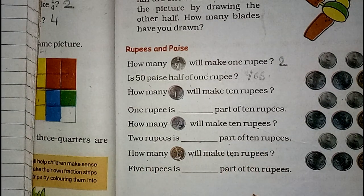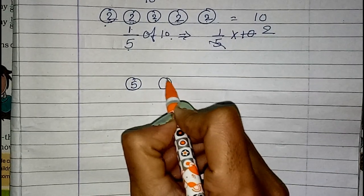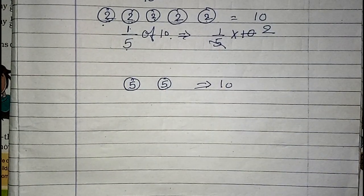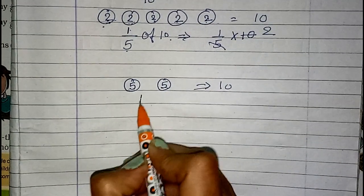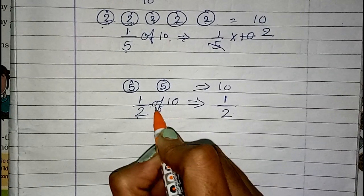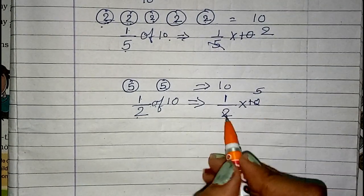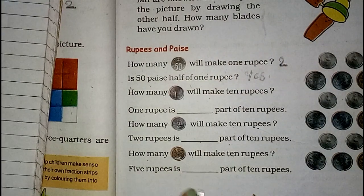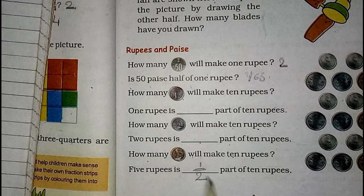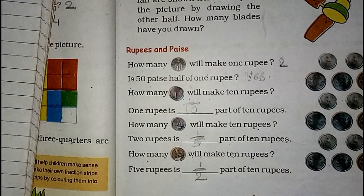How many 5-rupee coins will make 10 rupees? 5 plus 5 is 10, so two 5-rupee coins make 10 rupees. Among 2 coins, 1 coin — so half. 1/2 of 10 means multiply: 2 fives are 10, so 5 rupees is the half part of 10 rupees. To summarize: 5 rupees is half of 10 rupees, 2 rupees is one-fifth part of 10 rupees, and 1 rupee is one-tenth part of 10 rupees.